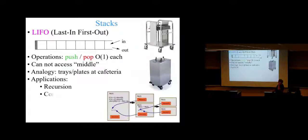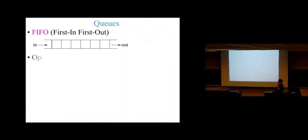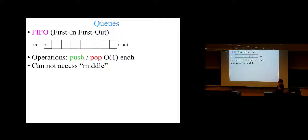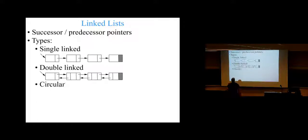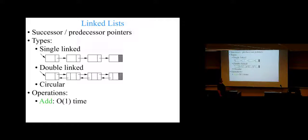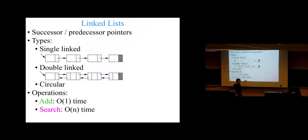Stacks are last in, first out. Queues are first in, first out. They both have a lot of uses in computer science in general and in algorithms in particular. Linked lists — everything points to its logical successor. You can have doubly linked lists. Searching takes a long time, but adding and deleting a node, if you know where the node is and have a pointer to it, can be done more quickly.